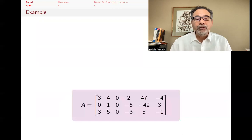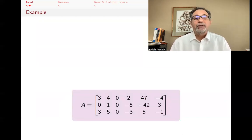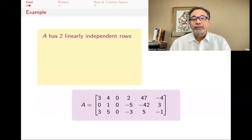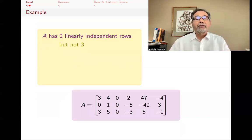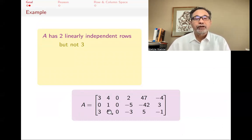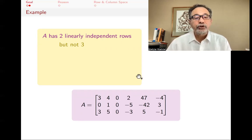Let me give you an example. Here's a matrix with three rows and six columns — it's three by six. It has two linearly independent rows. The first two rows, for example, are linearly independent; you can't find one as a scalar multiple of the other. But it doesn't have three linearly independent rows because when you add the first two columns, you get the third: three plus zero is three, four plus one is five, two minus five is minus three, and so forth.